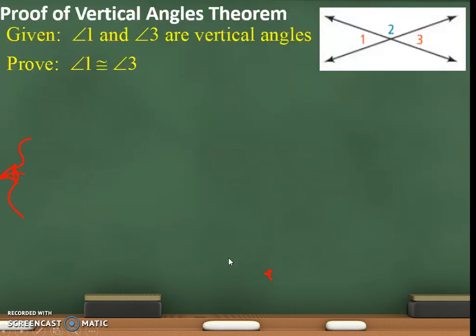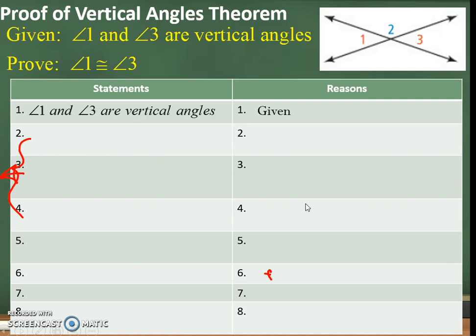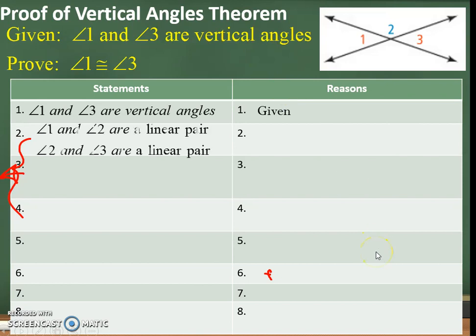Proof of vertical angles theorem. Given: angle 1 and angle 3 are vertical angles — right here, 1 and 3. Prove that these two are congruent. Here is the statement: angle 1 and angle 3 are vertical angles — that's given. You always start with given. Next: angle 1 and angle 2 are a linear pair, and angle 2 and angle 3 are a linear pair — they're right next to each other. This is the definition of linear pair.